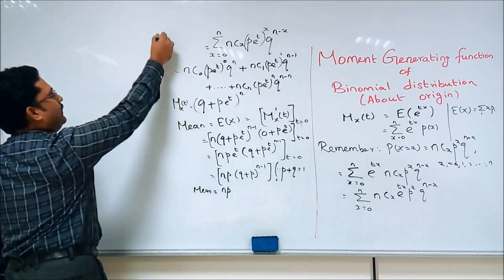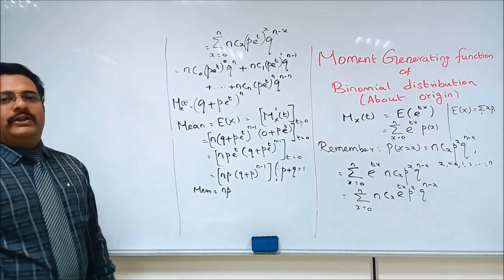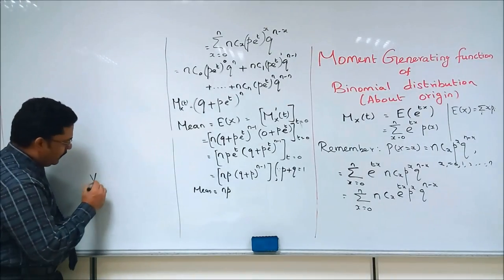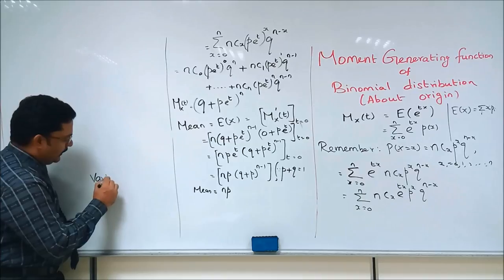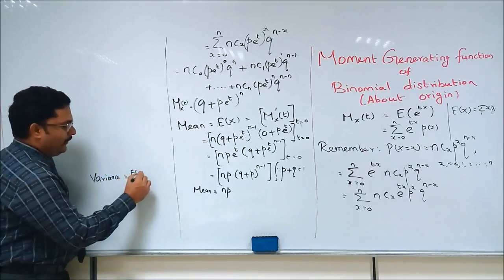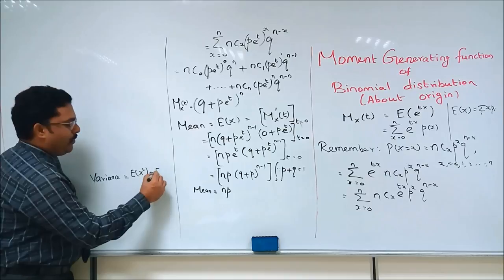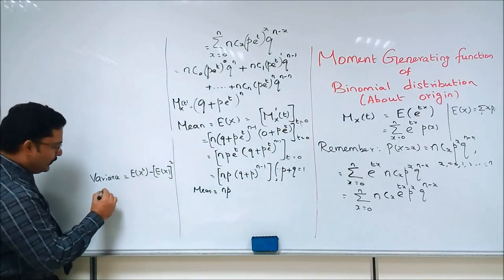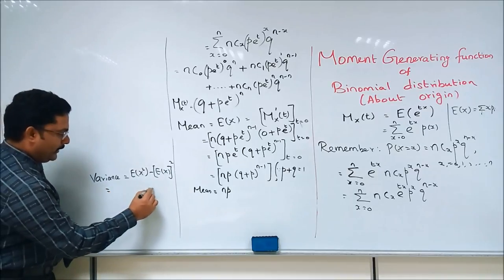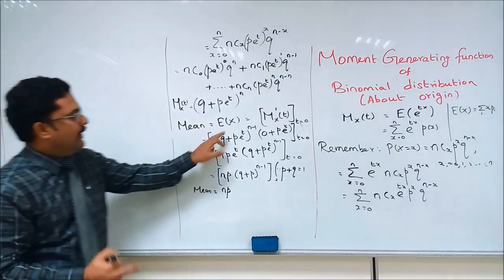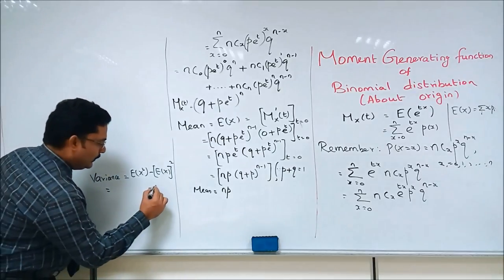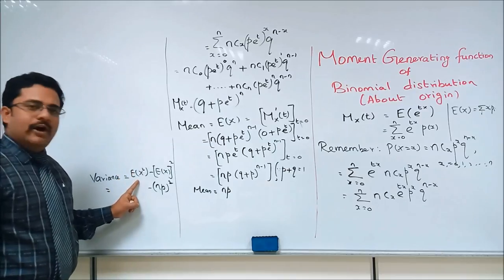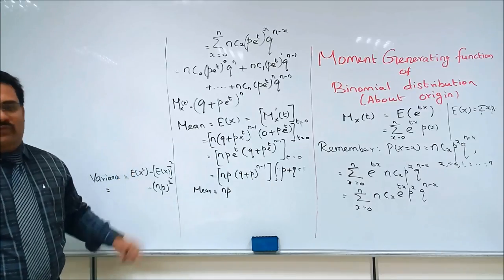The next step is to find the variance. The rule for variance is: Var(X) = E[X²] - (E[X])². We already found E[X] = np, so this becomes E[X²] - (np)². If we find E[X²], we are finished. E[X²] is equal to the second derivative of our moment generating function at the point t=0.